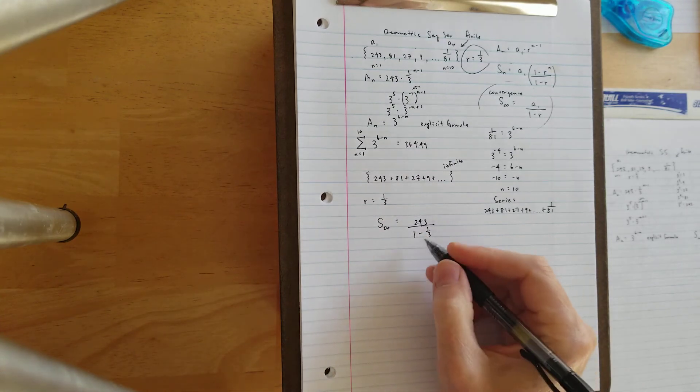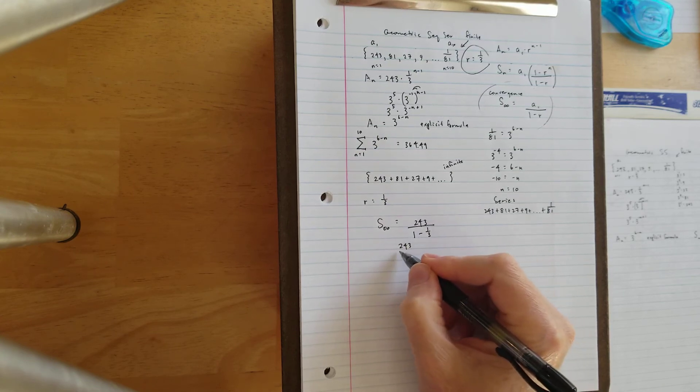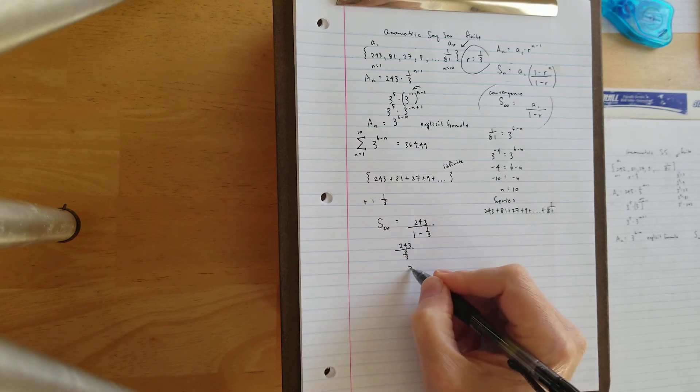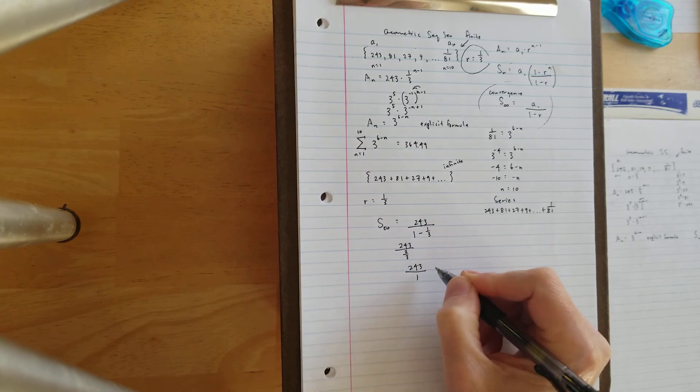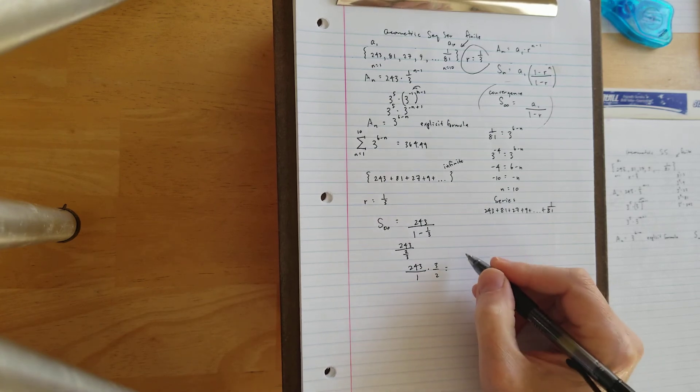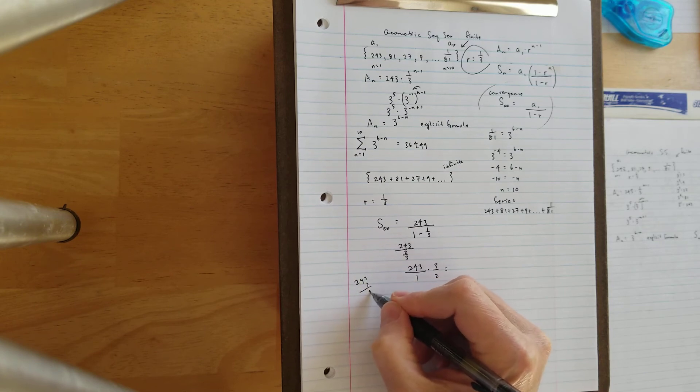Let's do some calculations here. So we get 243 divided by 2 thirds, and then we're simply going to multiply 243 by 3 halves. That's kind of a weird number. We'll leave it as a fraction. Let's see. 243, 3, 9, 12.